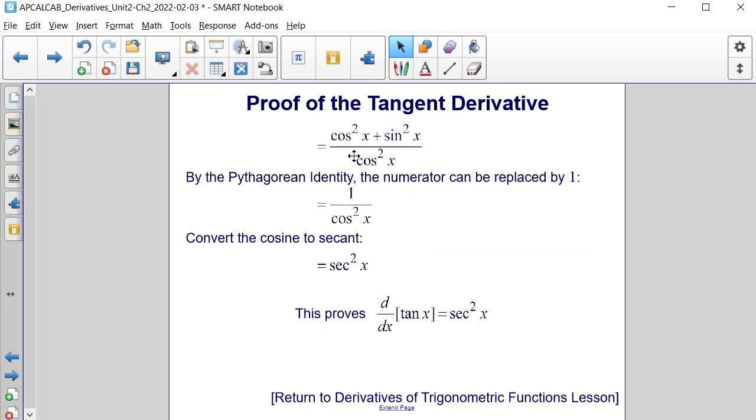By the Pythagorean identity, sine squared of x plus cosine squared of x is equal to 1, we can replace that numerator expression with a 1.